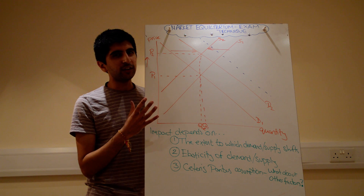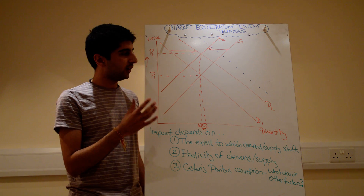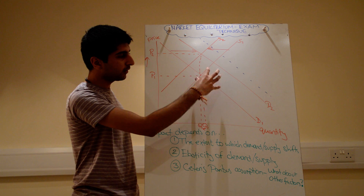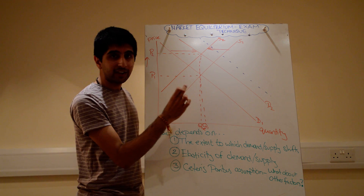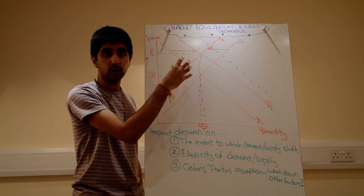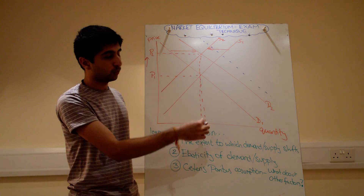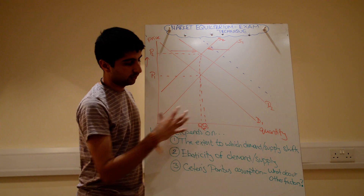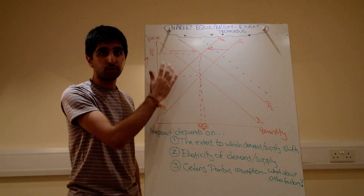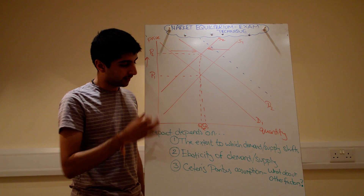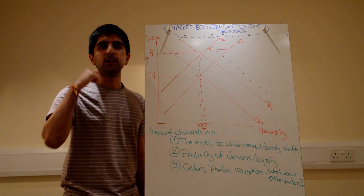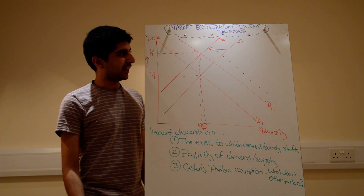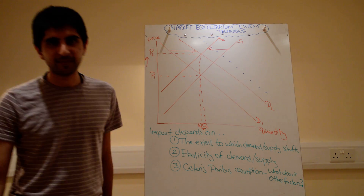This is a very easy question, but often many students don't get full marks. Now you know how to get full marks: diagram, brief analysis — just explain what you showed on the diagram, the changes in prices, quantities, and equilibriums — and then your evaluation using these three points. The impact on price and quantity depends on these three points and you'll get your full marks. Do me proud, answer these questions properly. See you next time. Thank you.